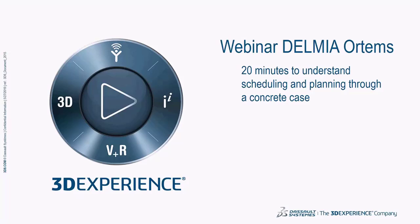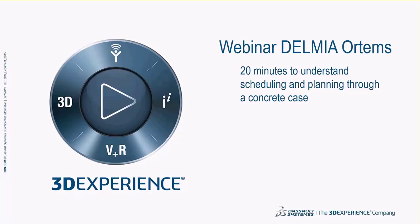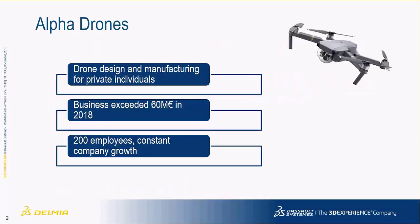Hello everyone and welcome to this Tell Me All Times webinar. This webinar is going to be about 20 minutes to understand scheduling and planning through a real case. This case will be the company Alpha Drones — a company that designs and manufactures drones for the private sector. It's a company with pretty high growth: their business exceeded 60 million euros in 2018, they currently have 200 employees, and they are considering new hires in the coming years.